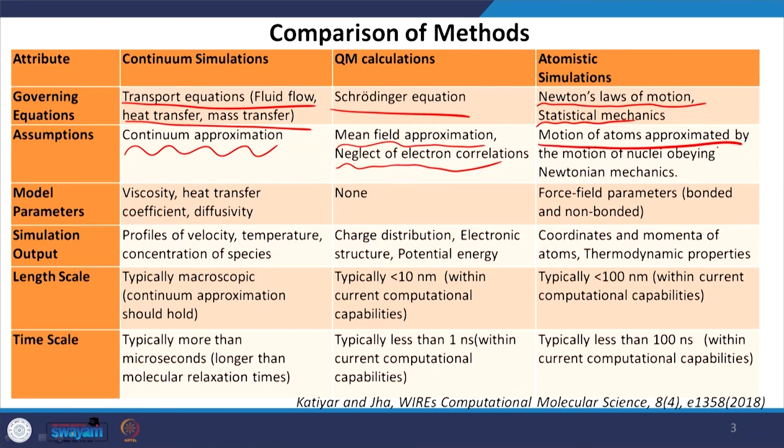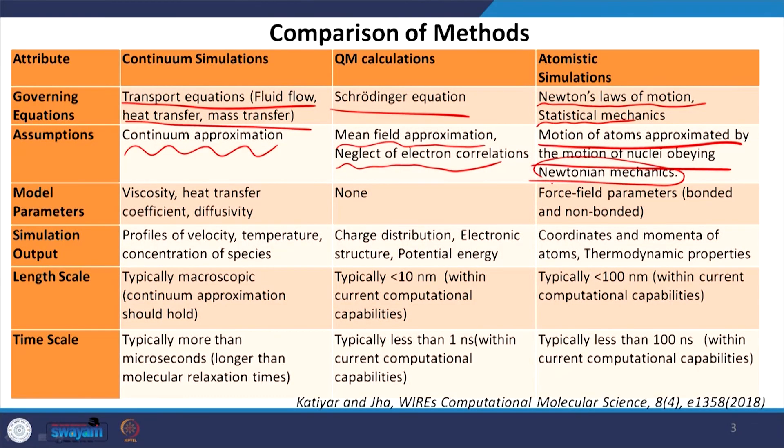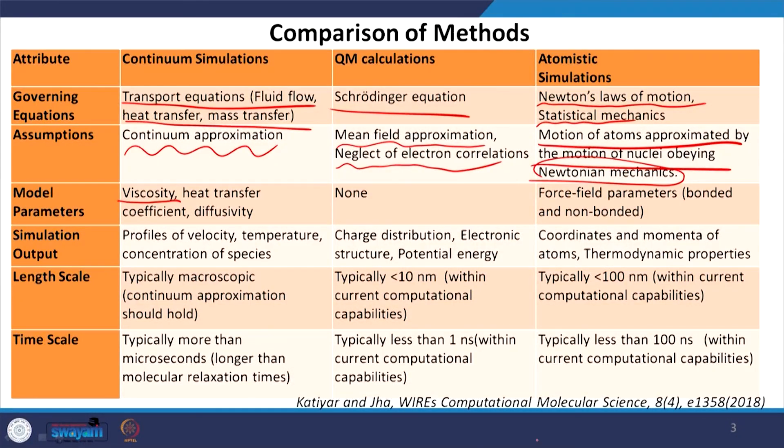In atomistic simulations we approximate the motion of atoms as the motion of nuclei — assuming electrons follow the nucleus — and we assume motion follows Newtonian mechanics, placing us in the classical regime. Model parameters differ across methods: in continuum simulations we have parameters like viscosity, heat transfer coefficient, or diffusivity, which are macroscopic parameters obtainable from experiments or from lower-level theory such as quantum mechanical or atomistic simulations.